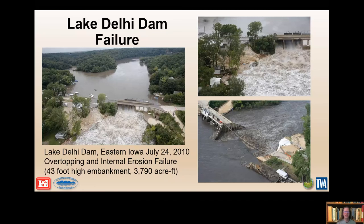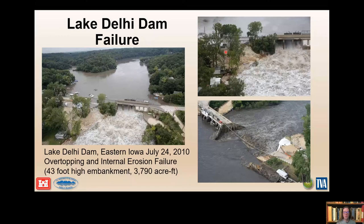Here we have the Lake Delhi Dam Failure, near Delhi, Iowa. It failed on July 24, 2010. One spillway gate was not operational — as you can see in the upper right corner with the gate closed — contributing to overtopping. The dam underwent internal erosion; specifics were unknown. It was overtopped, causing a 200-foot portion of the earthen embankment and roadway to breach, emptying about 3,800 acre-feet of the reservoir. No life loss occurred, but about 8,000 people were evacuated.